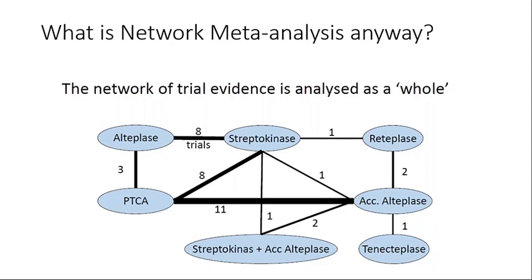Why network meta-analysis rose quickly after its invention was because it starts to answer some very powerful and clinically relevant questions — like which of all those treatments is the best? Rather than doing piecemeal analyses and trying to put them together like a jigsaw afterwards, it takes the jigsaw, puts it all together, and analyzes it as a coherent whole. That's why it has risen to prominence: it answers the question we often want to know — which treatment should we use for a given condition?